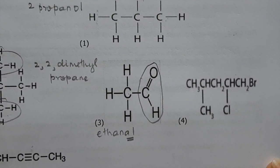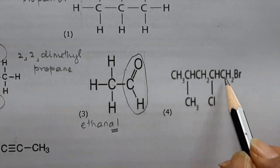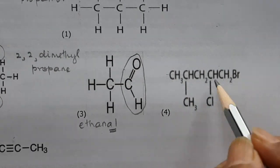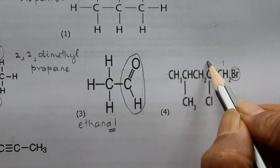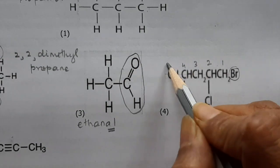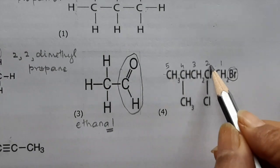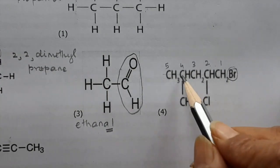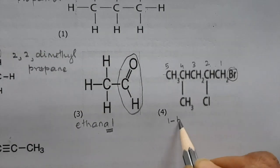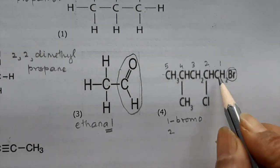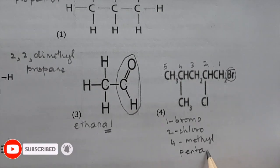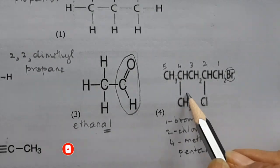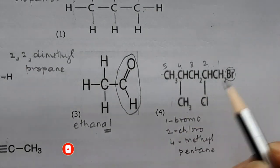(iv) The straight chain has five carbons with bromine on C1 and chlorine on C2. Numbering starts from the functional group end in alphabetical order: C1 = Br, C2 = Cl, giving 1-bromo-2-chloro-4-methylpentane. We do not start numbering from the CH₃ side because CH₃ is not a functional group — always start numbering from the functional group.